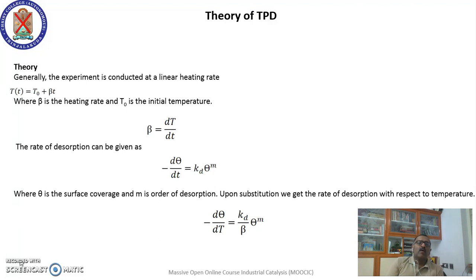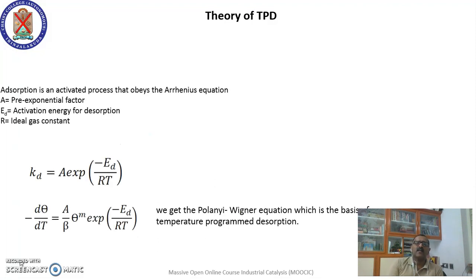Upon differentiation, β = dT/dt. The rate of desorption can be given as: −dθ/dt = (k_d / β) · θ^m. The negative sign is because desorption involves a decrease in the number of adsorbed molecules. Here k_d is the rate constant for desorption, θ is the surface coverage, and m is the order of desorption.